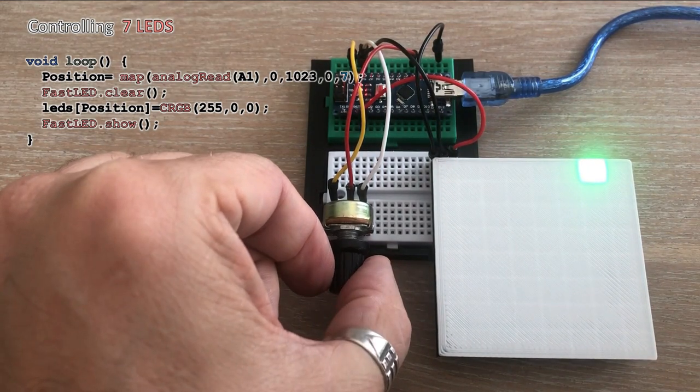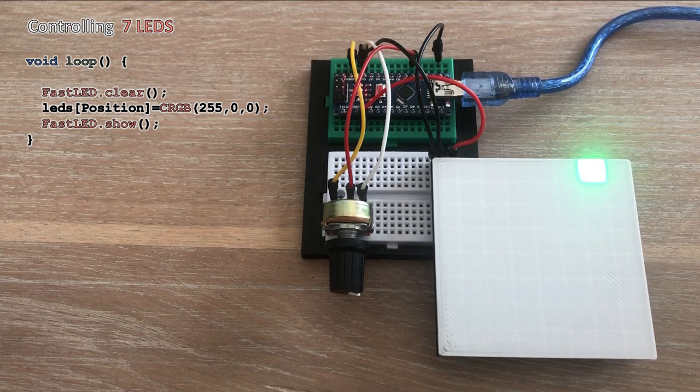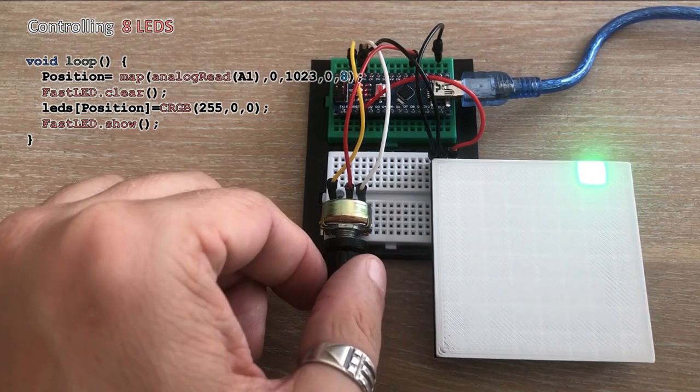Straight away we run into a problem. We cannot reach the far right value of the range. In this case you can tweak the range. We change the mapping to from 0 to 8.